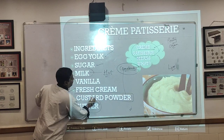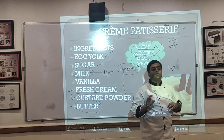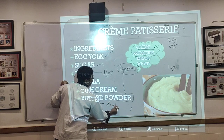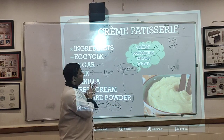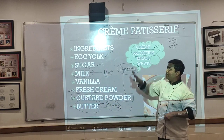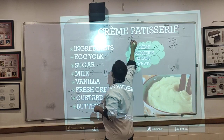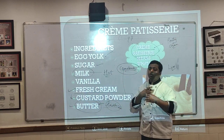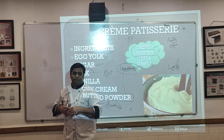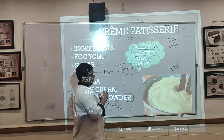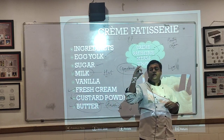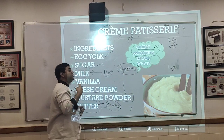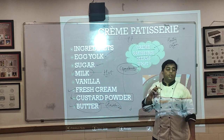At the end, once the custard is made, you add butter. Butter acts as an enriching agent, making the sauce richer and thicker compared to Crème Anglaise. Crème Patisserie is used in many desserts and pastries, including profiteroles — also known as cream puffs — which are small cabbage-shaped pastries made from choux pastry.